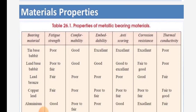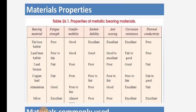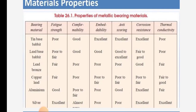Here is a very important table of material properties including fatigue strength, conformability, embeddability, anti-scoring, corrosion resistance, and thermal conductivity. These are the properties of metallic bearing materials for different materials such as tin-based babbit, lead-based babbit, lead, bronze, copper-lead, aluminum, and silver.